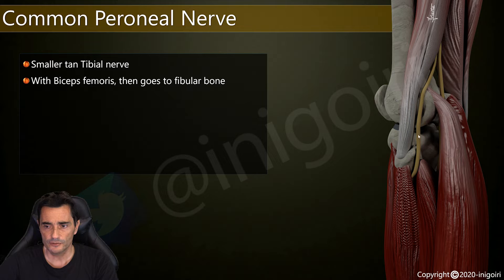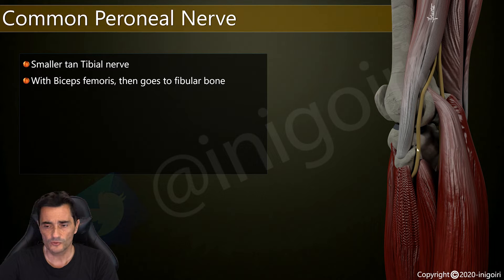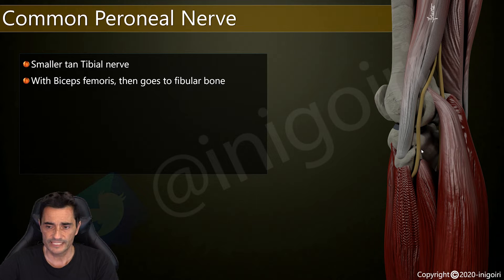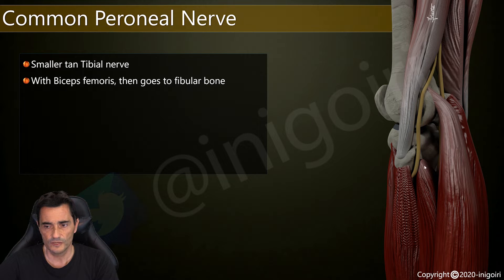Follow the common peroneal nerve and look closely where it reaches the fibula and the head of the fibula, because at this level there is only skin, a small amount of fatty tissue, and connective tissue surrounding the nerve, with the bone as the floor. It is very easy to damage here — with casts, compressions, traumas, or even with cysts or ganglia originating from the proximal fibulo-tibial joint. This is a very common area of injury.